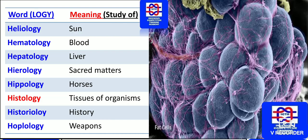The study of the liver is hepatology. Please remember the largest gland in our human body is the liver. Hierology is the study of sacred matters. Hippo means horses — the study of horses is hippology. The study of tissues of organisms is known as histology.